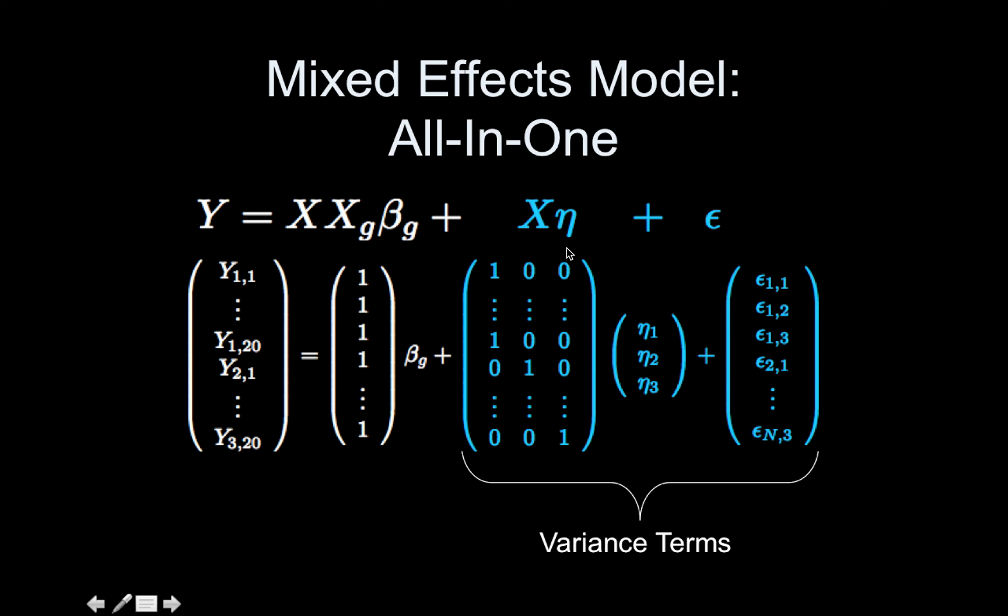This X eta, this is our random effect, and then we have the between-subject variance component, and then here is our within-subject variance component. So this is the all-in-one mixed effects model, and this is what traditional mixed effects software such as LMER in R uses.